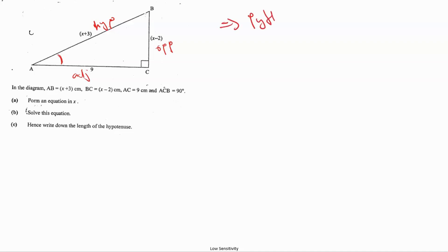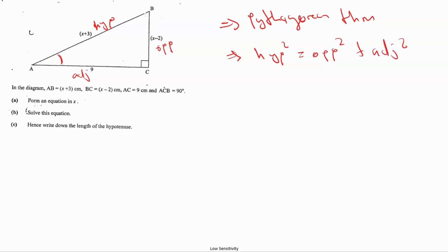Okay, so let's jump into it right away. We're given a right angle triangle, and we know that this angle is 90 degrees, so we know this is our hypotenuse. Looking from this angle, this becomes our opposite side and this becomes our adjacent side. In this case we're going to be using the Pythagorean theorem, which tells us that the hypotenuse squared is equal to the opposite squared plus the adjacent squared.